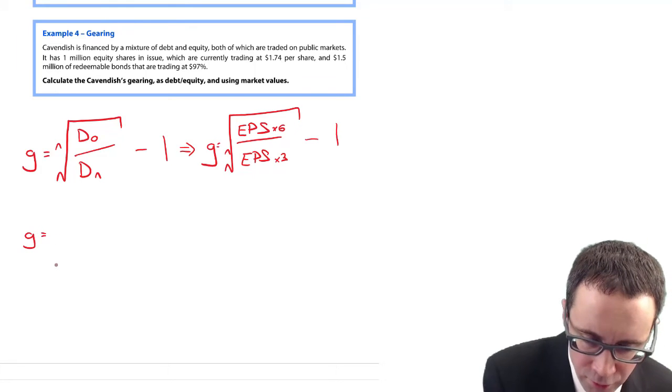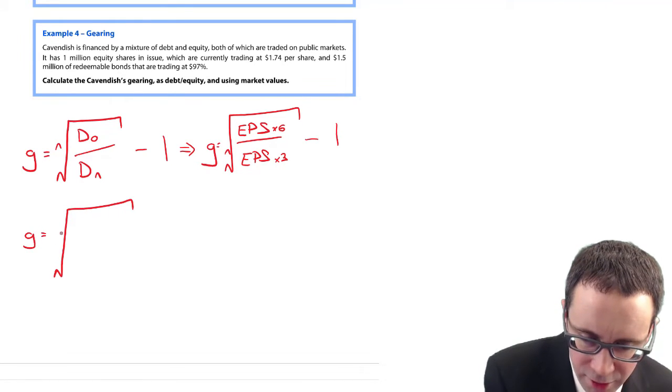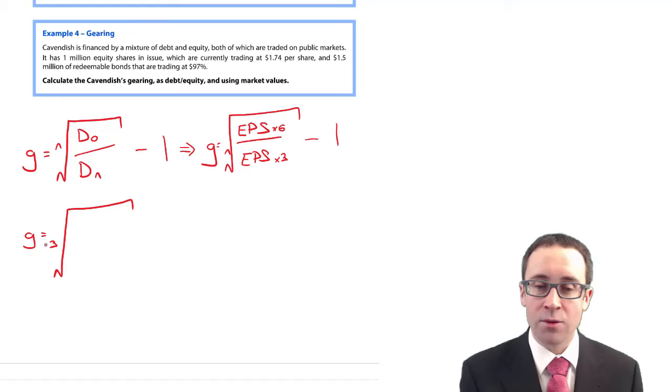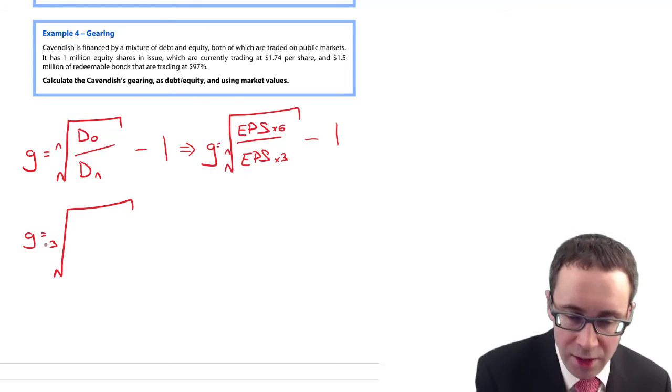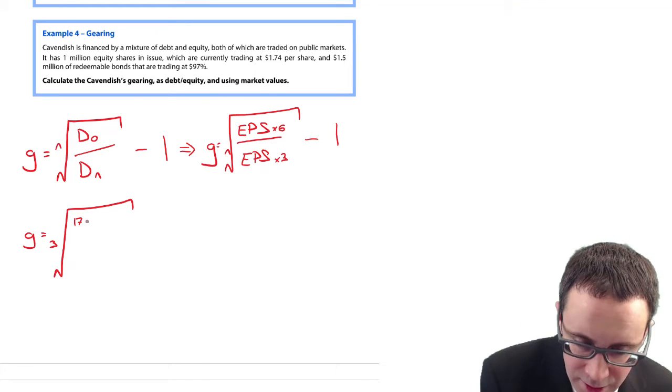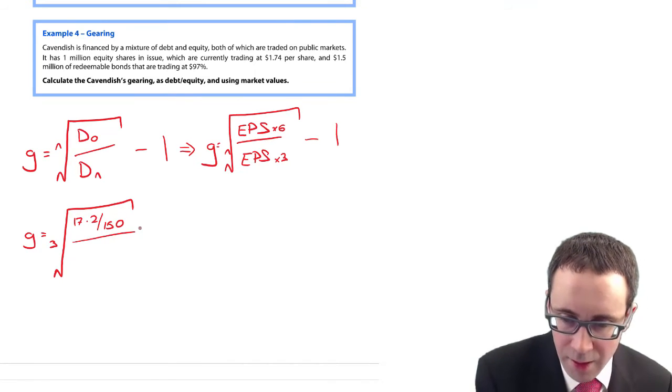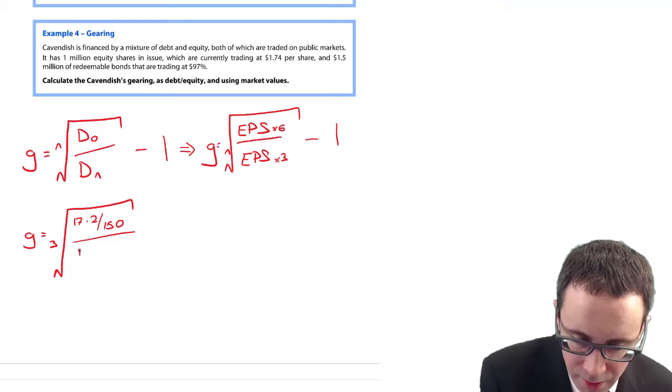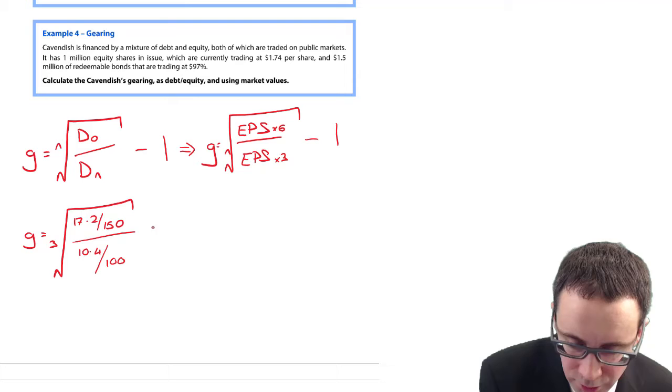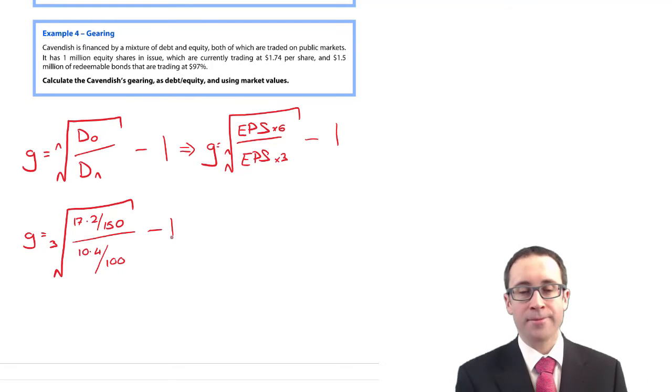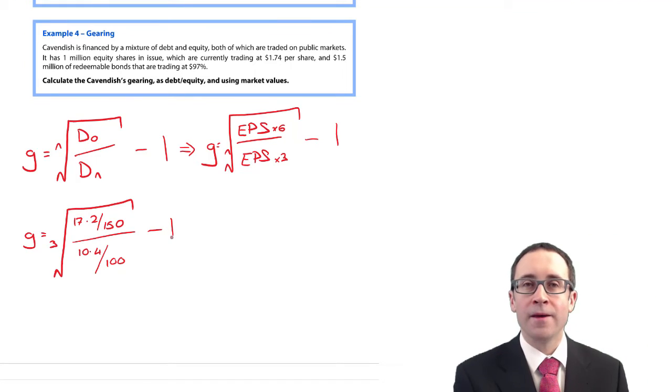Your growth rate is the Nth root, so N equals three. Your dividends per share in X6 was 17.2 over 150, and in X3 it was 10.4 divided by 100, then subtract one.